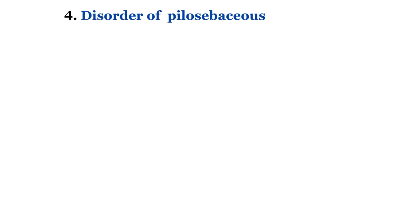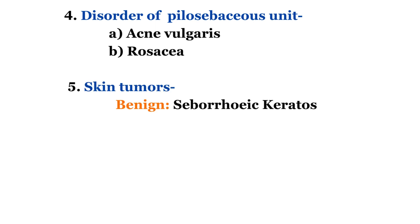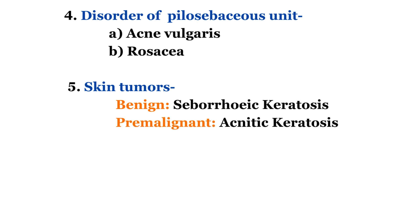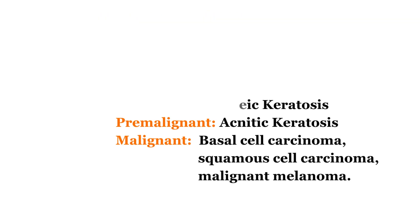4. Disorder of pilosebaceous unit. A. Acne vulgaris. B. Rosacea. 5. Skin tumours. Benign: seborrheic keratosis. Premalignant: actinic keratosis. Malignant: basal cell carcinoma, squamous cell carcinoma, malignant melanoma.